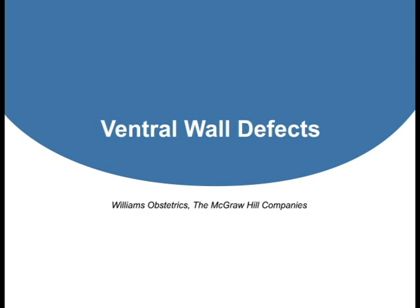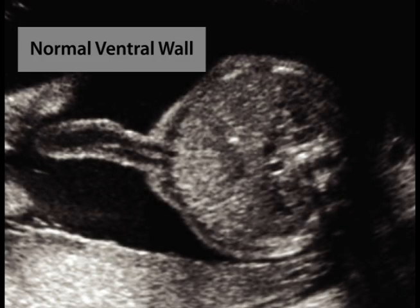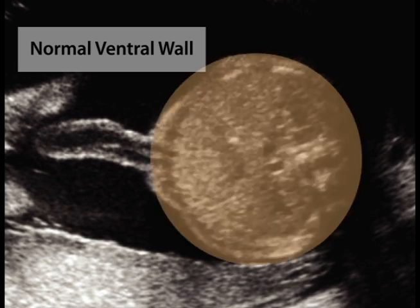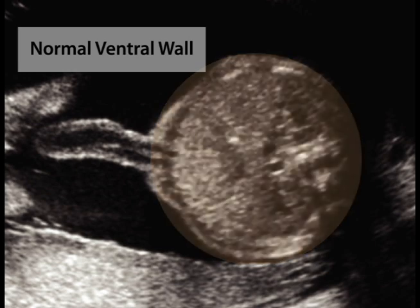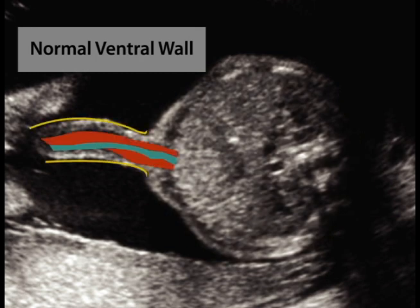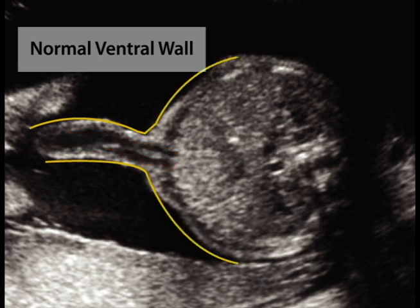Ventral wall defects. During standard obstetrical ultrasound examination, a transverse image through the fetal abdomen is obtained to inspect umbilical cord insertion into the anterior abdominal wall. Integrity of the ventral wall is also demonstrated in this view.